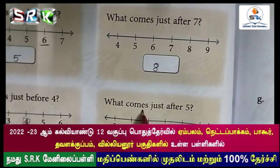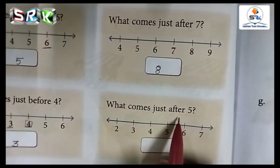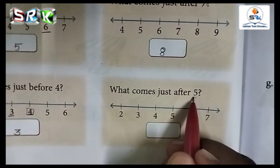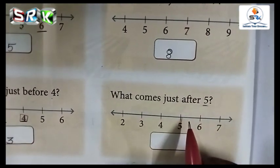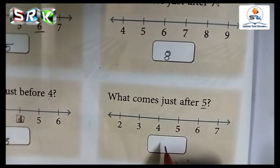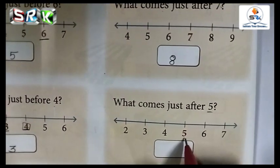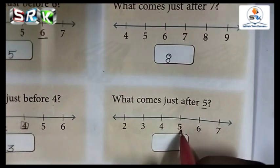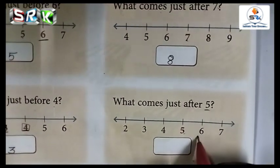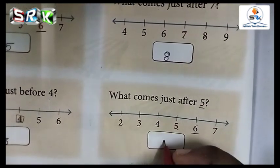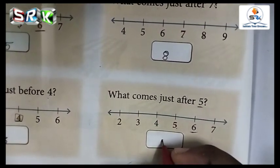Next one: what comes just after 5? Five after numbers — 6, 7, 8, 9, 10. Already you know that. So 5 here, after number is 6. Write 6 in the box, all of you.